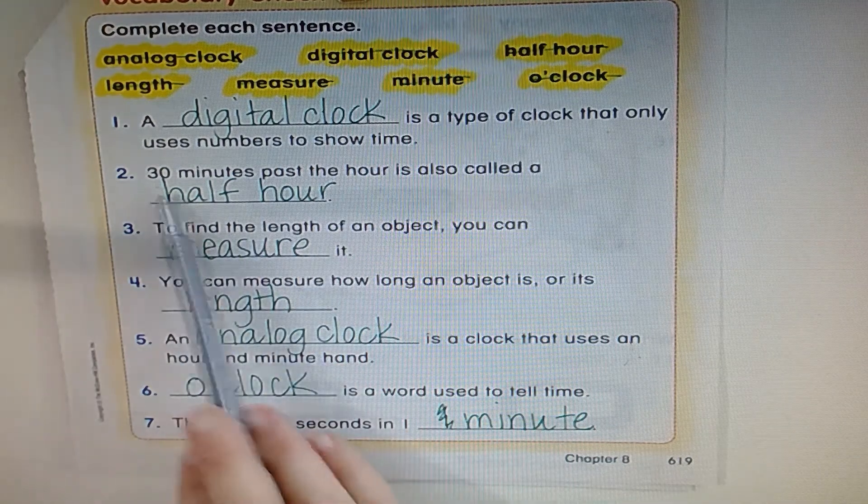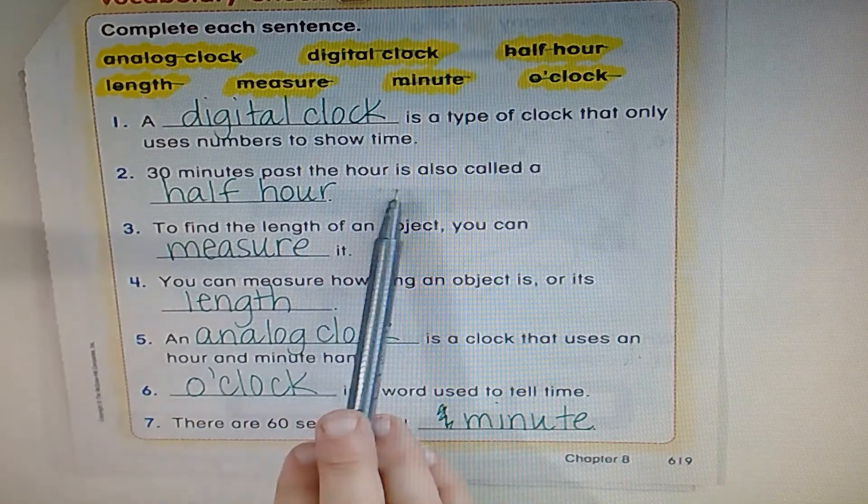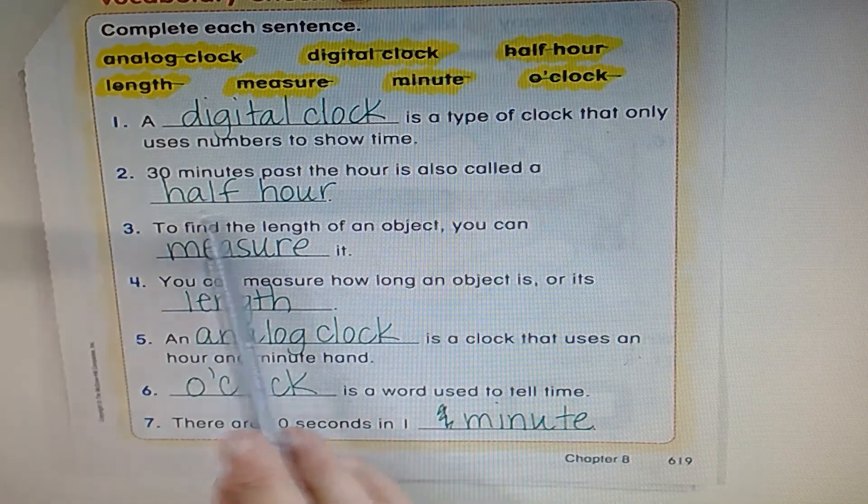A digital clock is a type of clock that only uses numbers to show time. A digital clock uses numbers. Awesome.